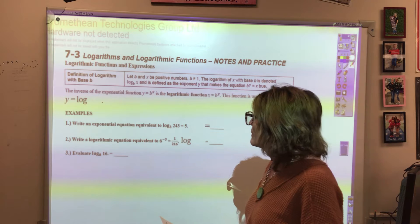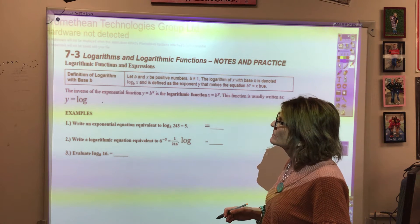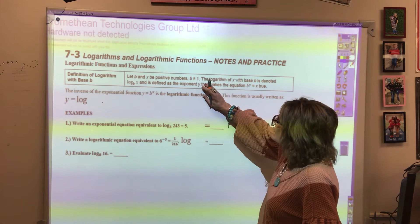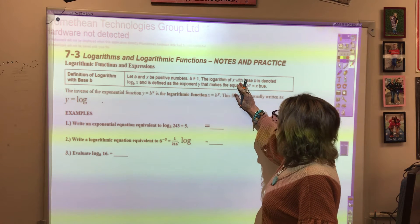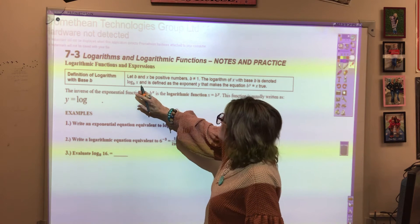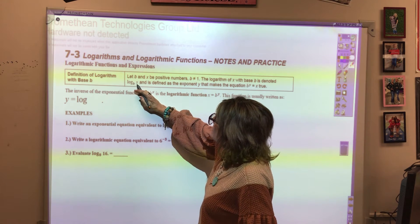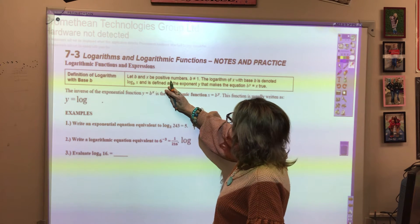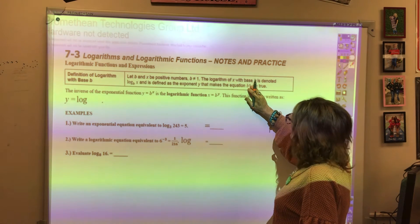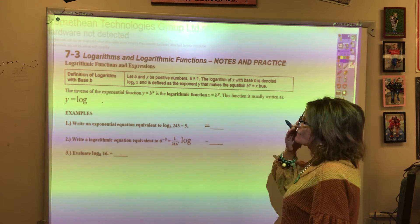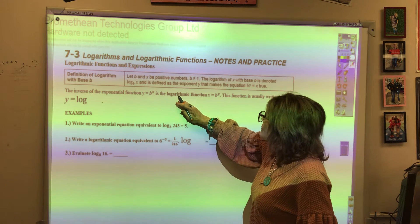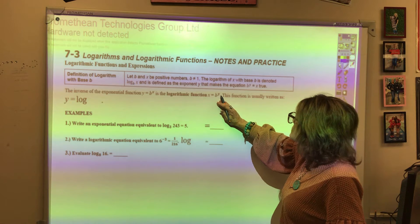So let's look at, first of all, the definition of logarithm with base b. Let b and x be positive numbers and b not equal to 1. The logarithm of x with base b is denoted as log base b of x, and is defined as the exponent y that makes the equation b raised to the y power equals x true. So the inverse of y equals b to the x is the logarithmic function x equals b raised to the y.